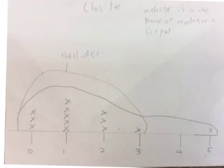This is a cluster. A cluster is a close group of numbers on a line plot. As you can see where I circled, there is a huge cluster. As you can also see, there is a skewed right, as there are a few outliers to the right of the cluster, causing a slant to the right.